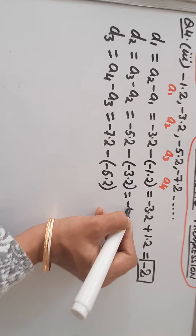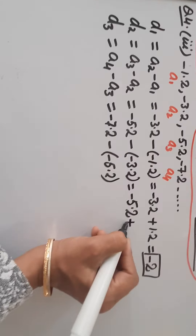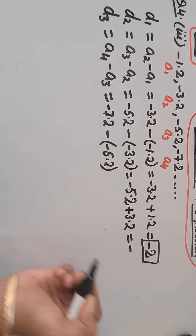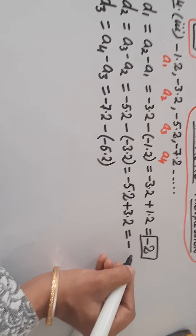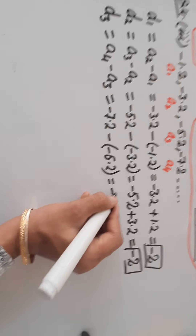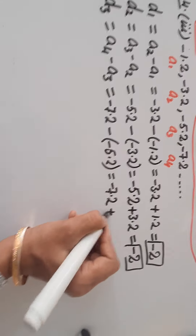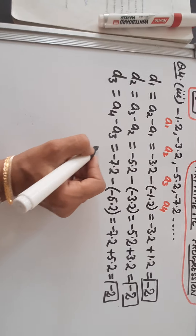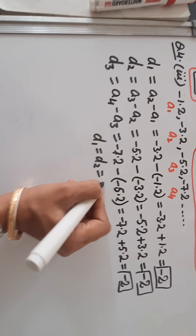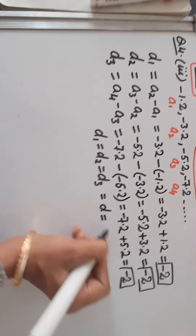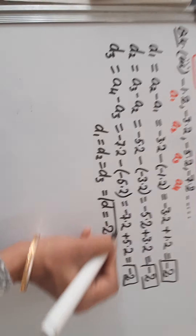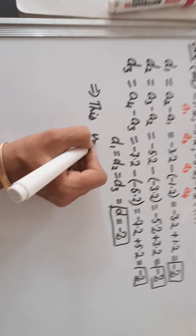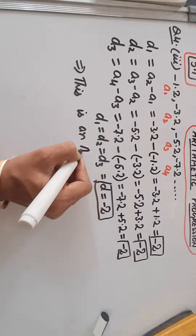Similarly, D2: -5.2 minus (-3.2). The greater number is negative, so 5.2 minus 3.2 gives -2 again. For D3: -7.2 minus (-5.2) equals -2 again. Because D1 equals D2 equals D3, the common difference D equals -2. This implies this series of numbers is an AP.